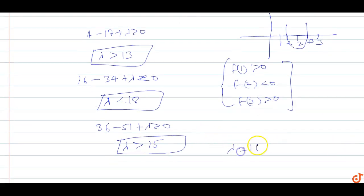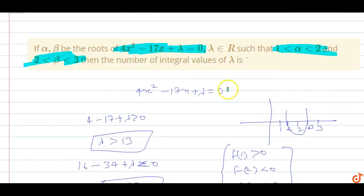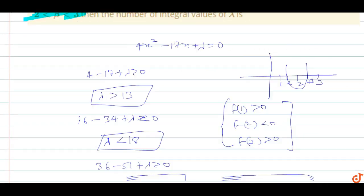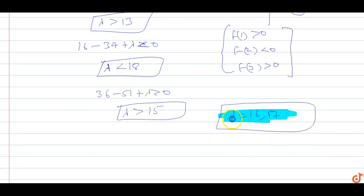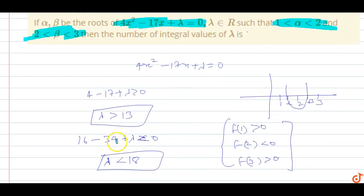Combining the conditions — λ > 13, λ < 18, and λ > 15 — the valid range is 15 < λ < 18. The integral values satisfying this are λ = 16 and λ = 17. So the number of integral values of lambda is equal to 2.